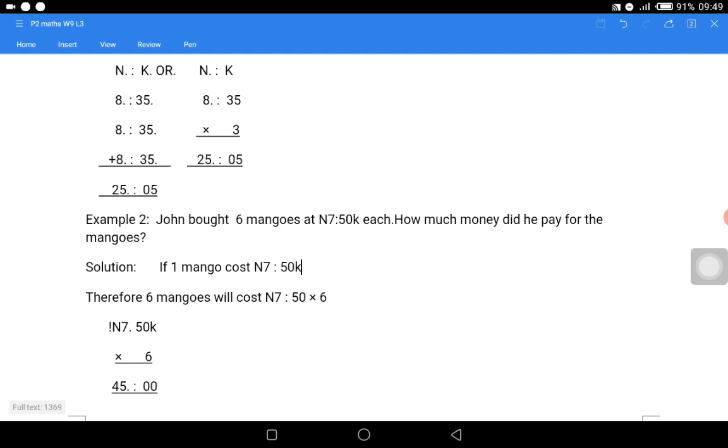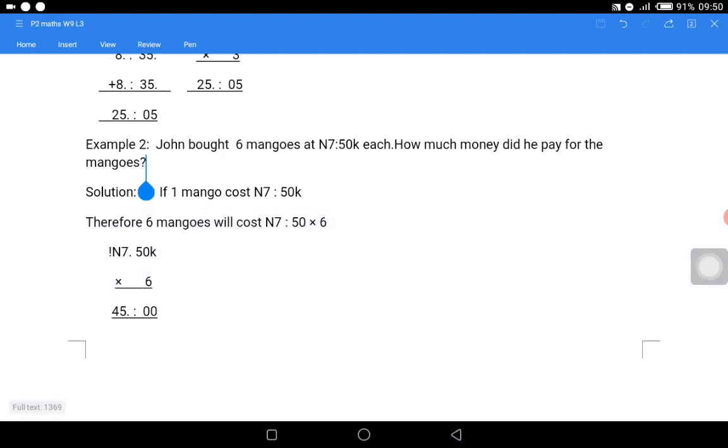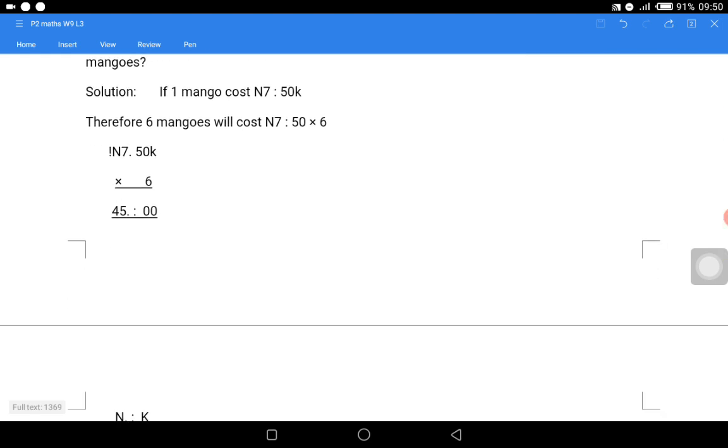Example two: John bought six mangoes at N7.50k each. That is, one mango costs N7.50k. How much money did he pay for the mangoes, for the six mangoes bought? Then we will now say N7.50k multiplied by six. Six times zero is zero, six times five is thirty, write zero and keep three. Six times seven is forty-two, plus three is forty-five. Our answer is N45.00k.